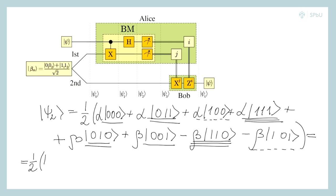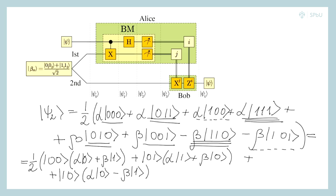I have one half here, 0 0 here, the state alpha 0 plus beta 1 here, the next term plus 0 1, and the state alpha 1 plus beta 0, the next term 1 0, it is the state alpha 0 minus beta 1, and the last term 1 1 and the state alpha 1 minus beta 0.